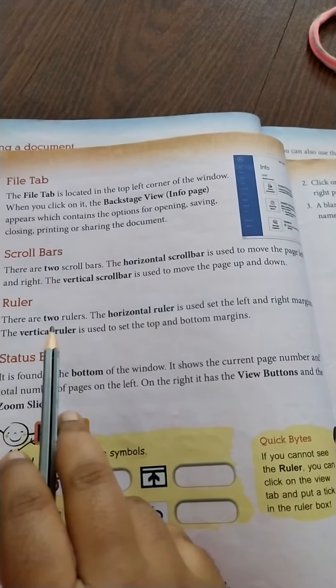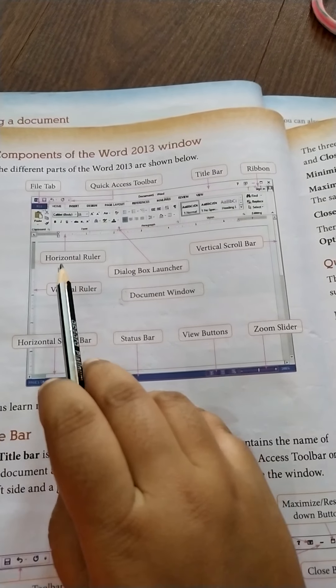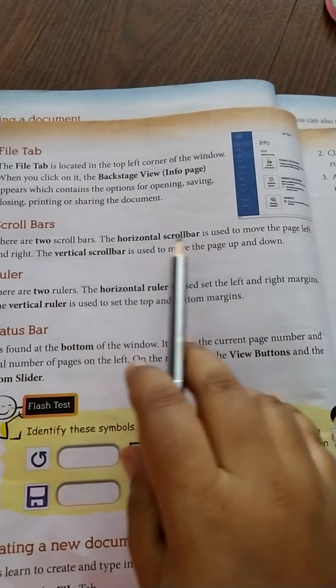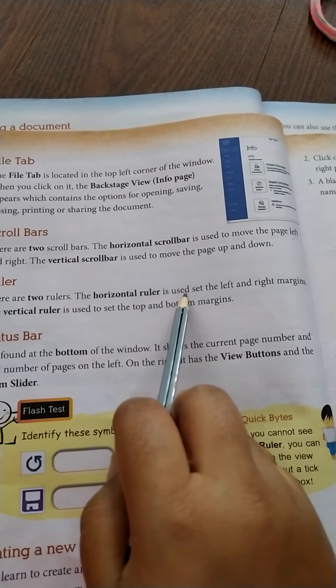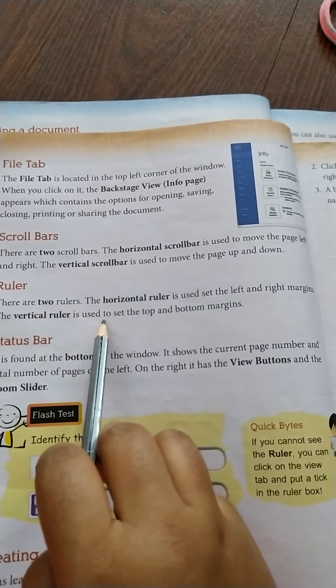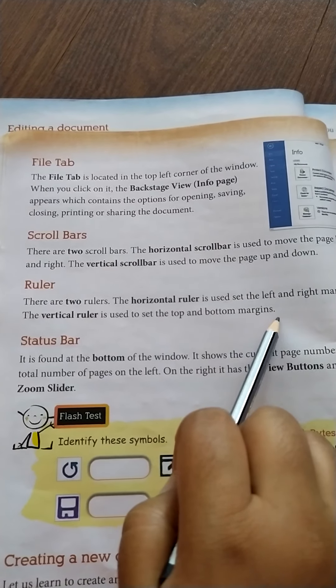Rulers. We have two rulers, horizontal ruler and vertical ruler. The horizontal ruler is used to set the left and right margin, and the vertical ruler is used to set the top and bottom margin.